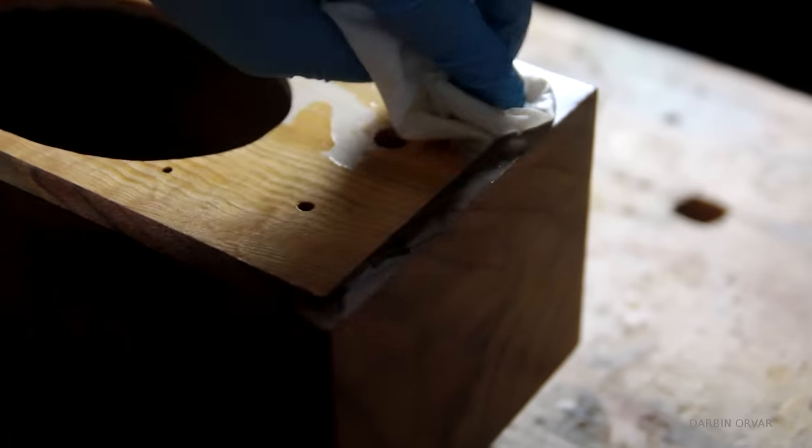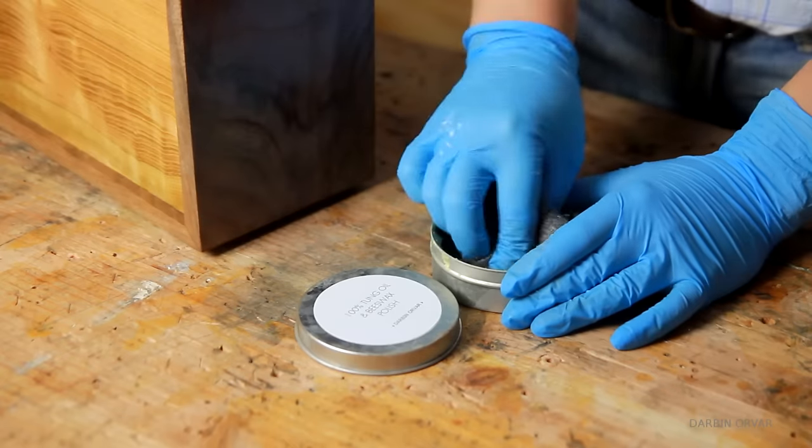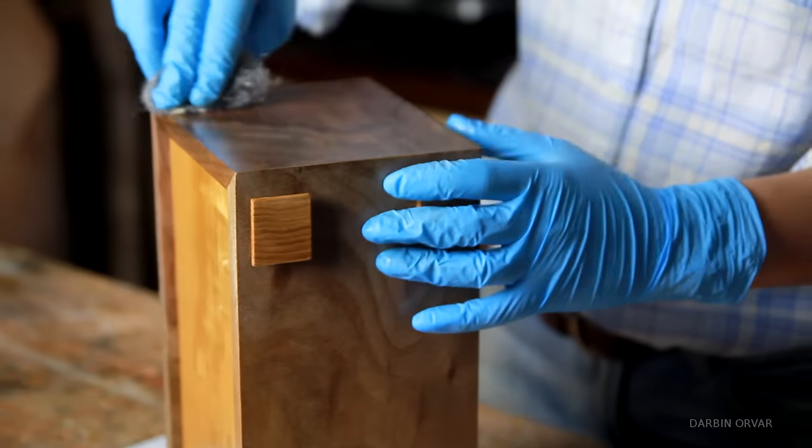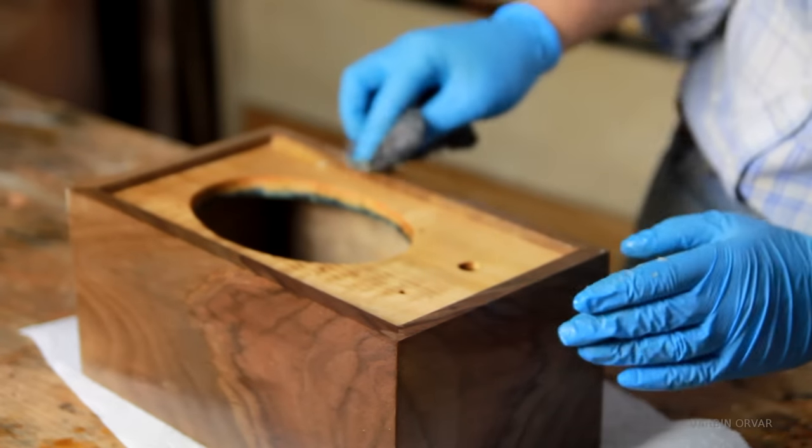For a finish I went with three coats of shellac. And once that was dried I added some of my tung oil wax polish with steel wool for that super smooth feel.